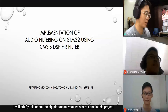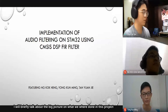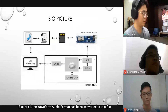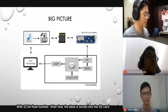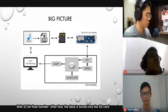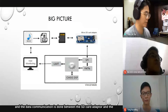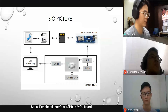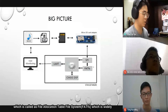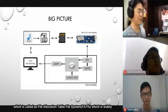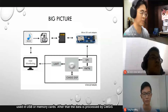I will briefly talk about the big picture of what we have done in this project. First of all, the waveform audio format has been converted into a text file with 32-bit float numbers. After that, the data is stored into the SD card, and data communication is done between the SD card adapter and the serial peripheral interface in the MCU board. Those data transmitted into the board will be managed by middleware called the File Allocation Table file system, which is widely used in USB or memory cards.